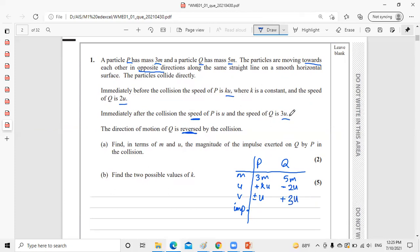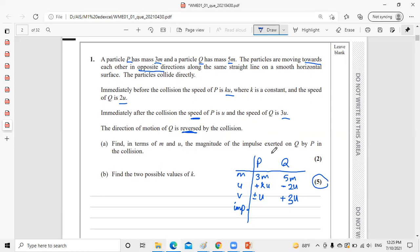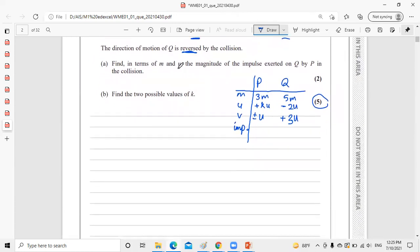We have two parts, part A and part B. Part A asks: find in terms of M and U the magnitude of the impulse exerted on Q by P in the collision. The magnitude doesn't matter the direction.